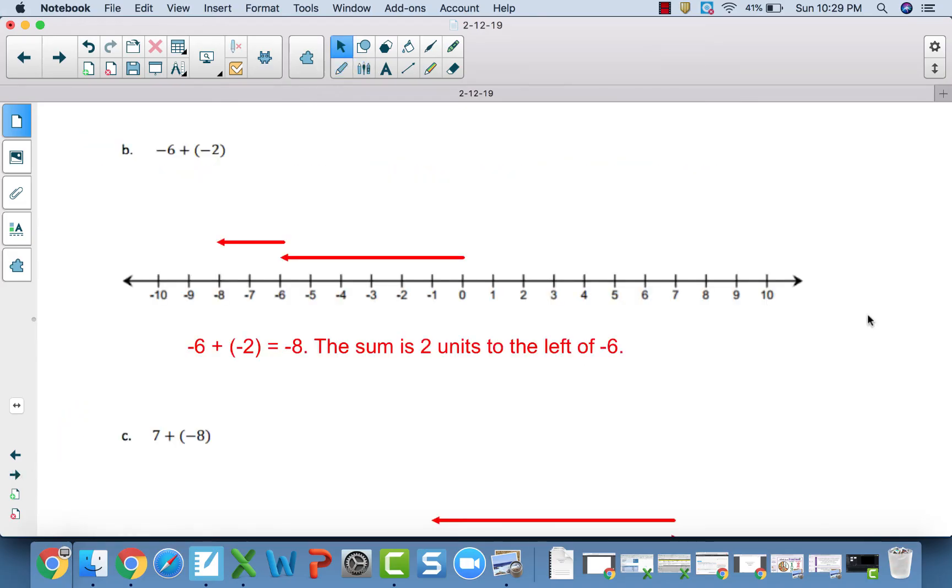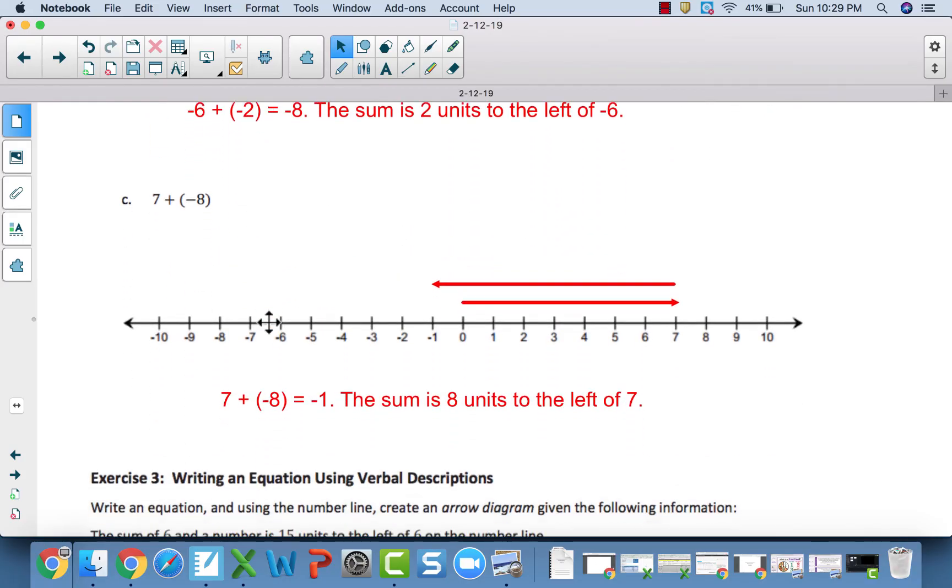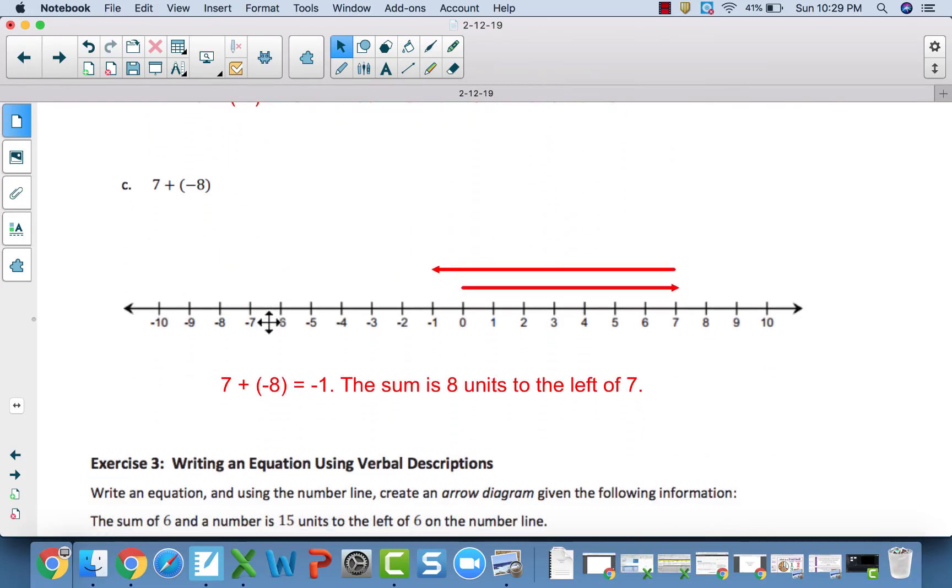For part B, you should have got negative 8. The sum is 2 units to the left of negative 6. Notice we need to count down two times because we have a negative followed by another negative. For C, the sum is negative 1. The sum is 8 units to the left of 7 because our second integer is a negative. So, that means that will put the sum to the left of whatever the original P value is.